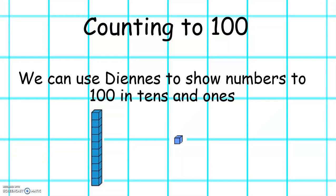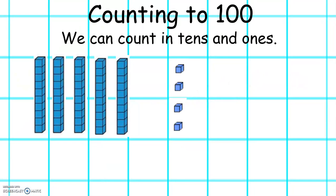We can use genes to show numbers to 100 in tens and ones. Let's count in tens and ones: 10, 20, 30, 40, 50, 51, 52, 53, 54. So our number is 54.